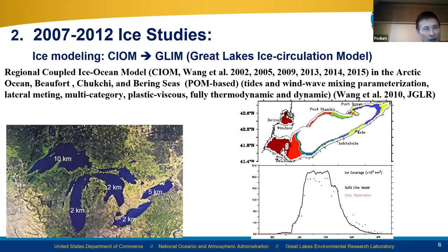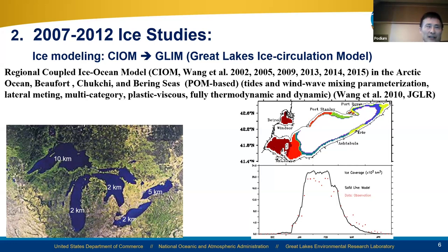In 2007 we also worked on ice modeling. I applied a coupled ice-ocean model to the Great Lakes ice circulation model with David Schwab, and we started with Lake Erie, then expanded to all five lakes with Schwab and Guo. This was the first time ever we applied an ice model to the Great Lakes and put it into a nowcast-forecast system — Schwab's GLERL Coastal Forecast System — for ice.